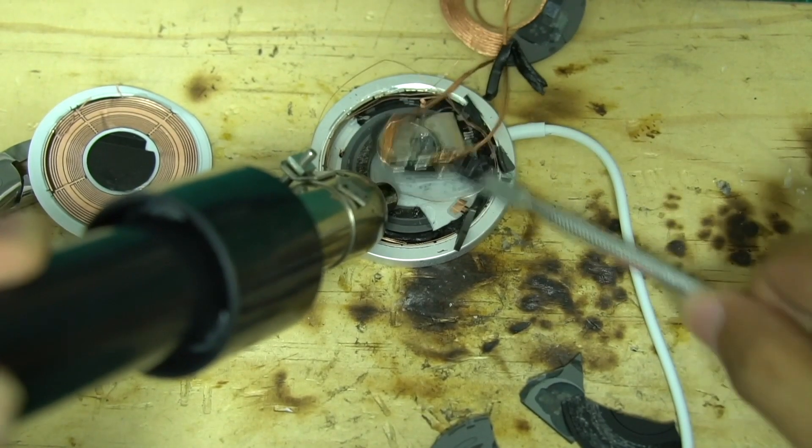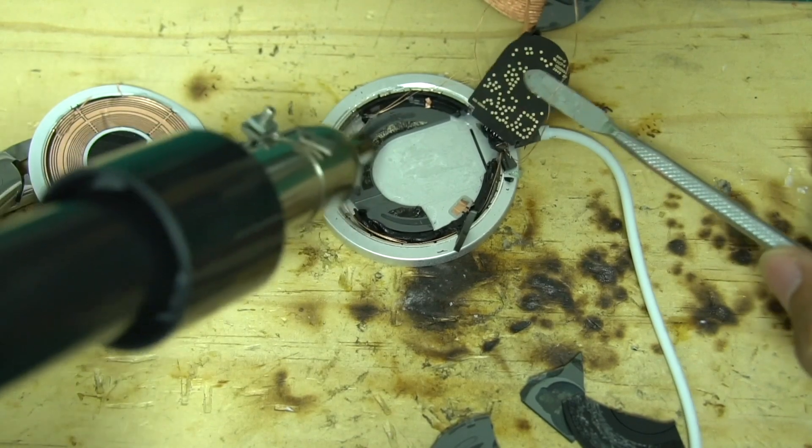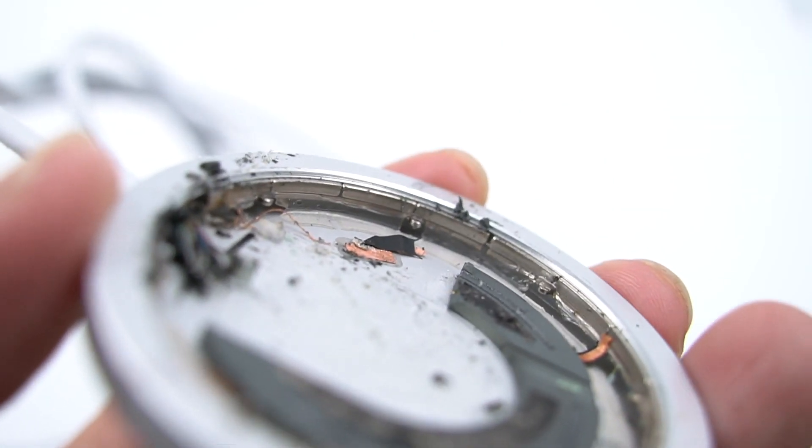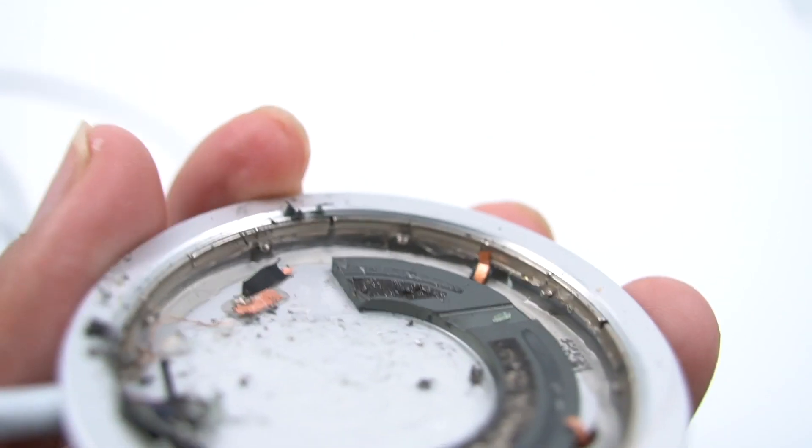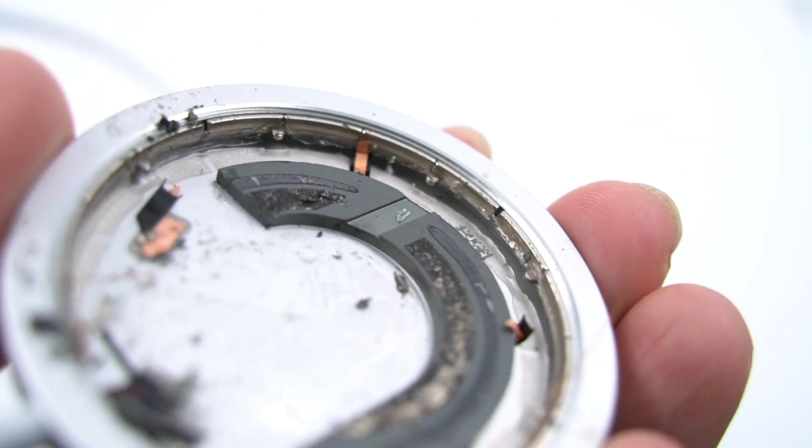The PCB is at the bottom of the charging pad and fixed by glue. The magnet ring on the edge is composed of multiple small magnets and is also fixed by glue.